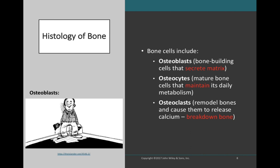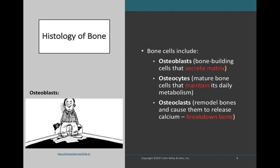Looking at bone under the microscope, we find three different types of cells: osteoblasts, osteocytes, and osteoclasts — each at a different stage of life serving a different function. Osteoblasts are immature cells that secrete bone matrix known as osteoid, which is what we think of as bone — a very hardened bone matrix. Since bone is connective tissue, it is made up of cells and extracellular matrix, and osteoblasts secrete that matrix. Osteocytes are more mature bone cells that monitor and maintain bone rather than secreting matrix.